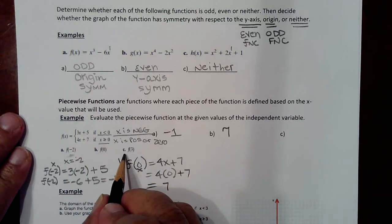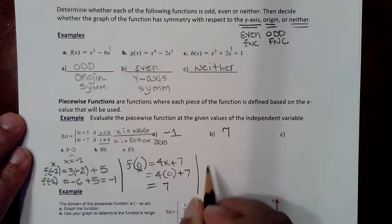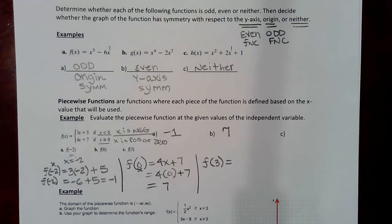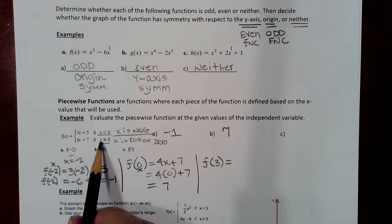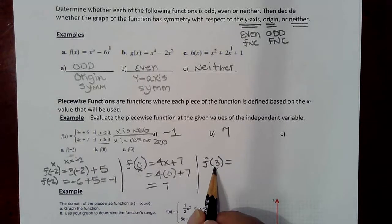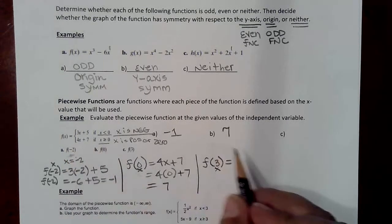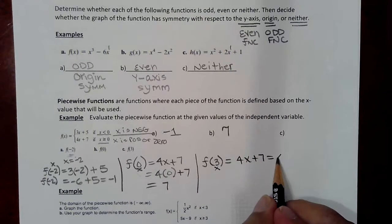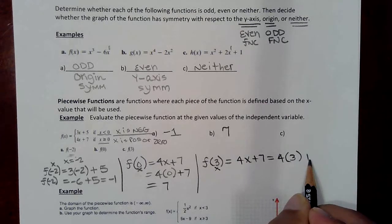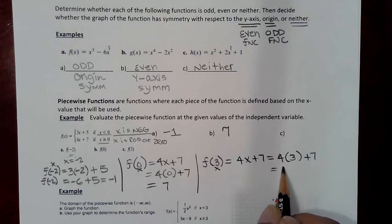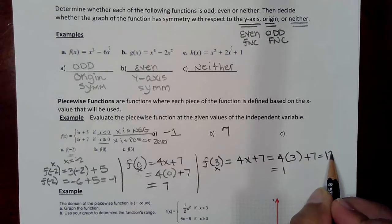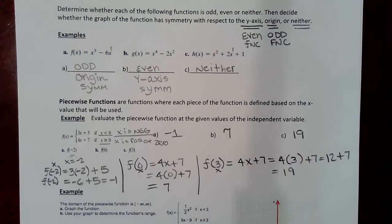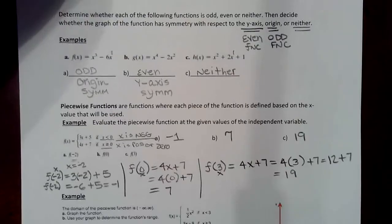In part C, evaluate the function at three. Since three is greater than zero, we again use the four x plus seven piece. Plugging in three: four times three is twelve, twelve plus seven is nineteen. So f of three equals nineteen. That covers the evaluation problems for this piecewise function.